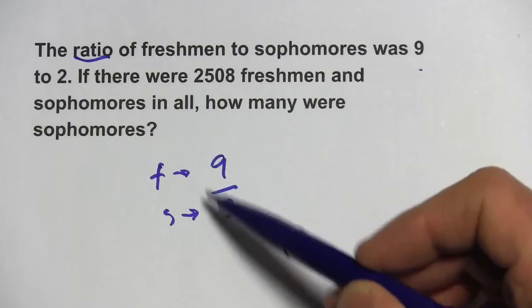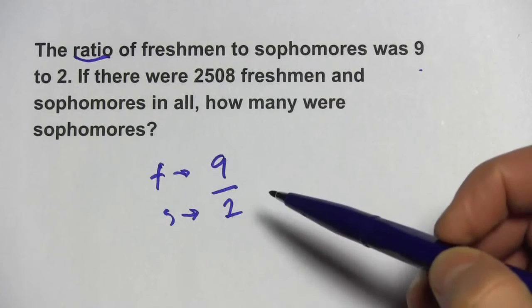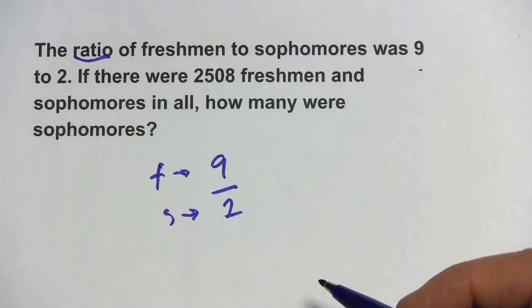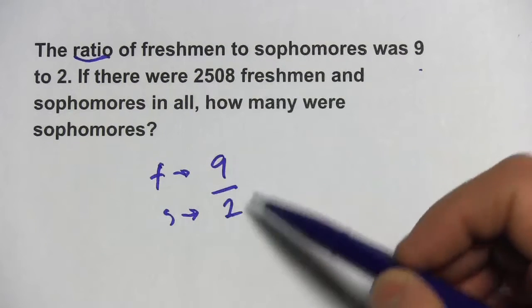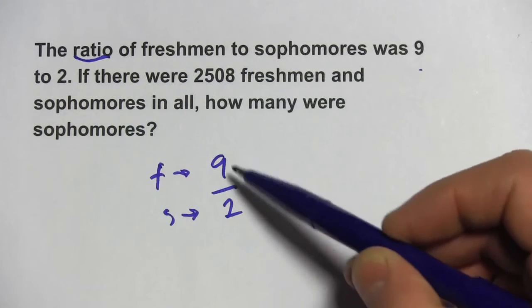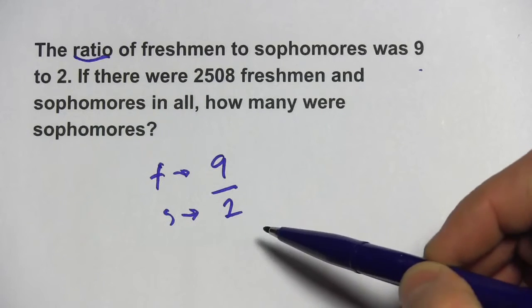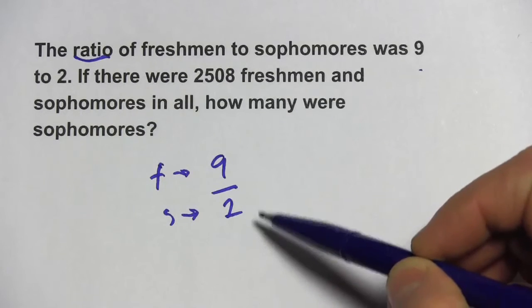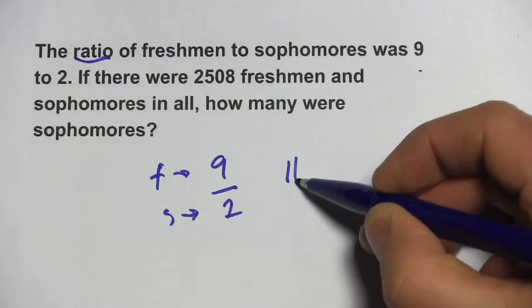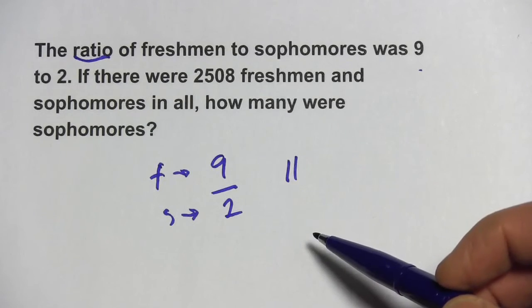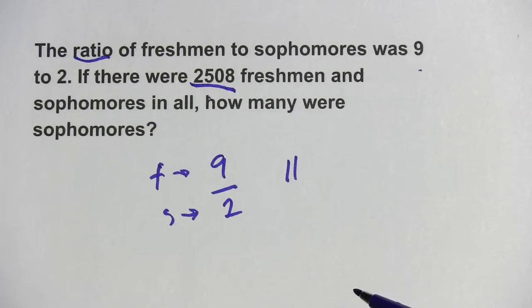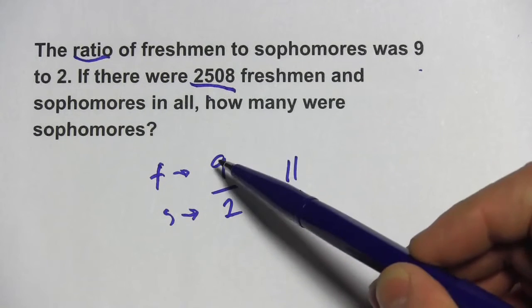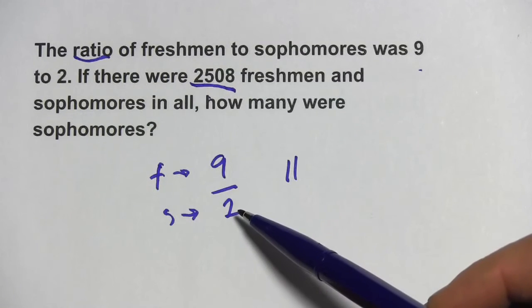And then it says this whole thing, this plus this, adds up to 2,508 somehow. So when I think of how to do this, I think what these two add up to: 9 plus 2 equals 11. So in this ratio, there's a total of 11 units in all. If we can divide this number into 11 pieces, we'll know that 9 of those pieces should go up here and 2 of those pieces should go up here.